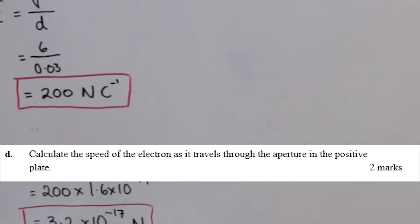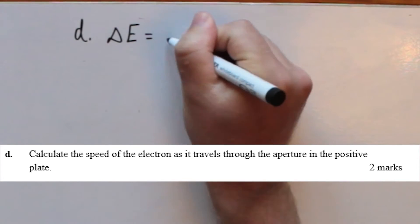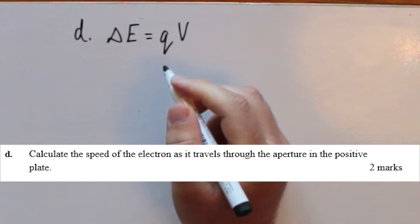Part D, calculate the speed of the electron as it travels through the aperture in the positive plate. The speed of the electron can be found by equating the work done on the electron to its kinetic energy as it passes through the aperture. The work done is equal to the charge multiplied by the voltage.